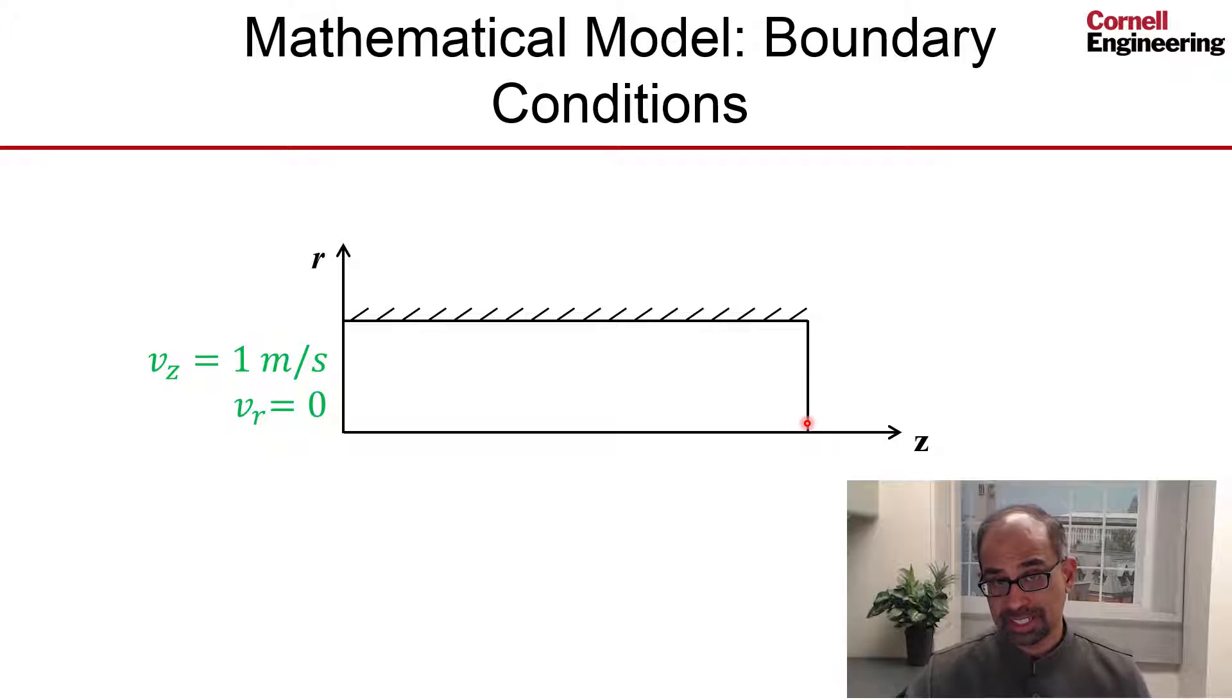This is where the flow is leaving the domain at that boundary, and we set the pressure to be one atmosphere.